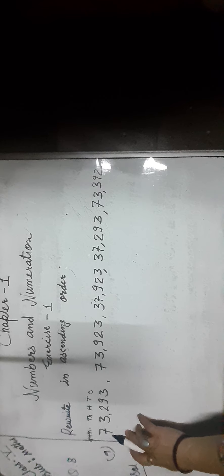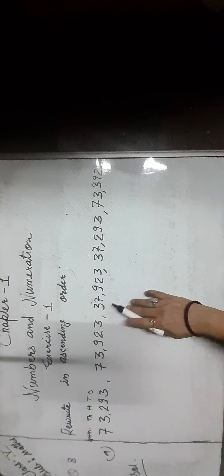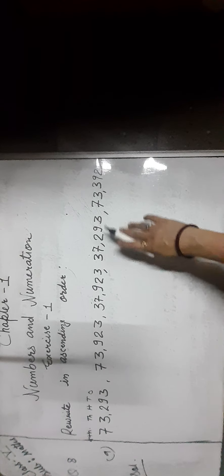As you can see, all numbers have five digits — ones, tens, hundreds, thousands, and ten thousands. Now first we compare the ten thousands place digit, that is 7, 7, 3, 3, 7. As you can see, 3 is smaller than 7, so we have to find out — we have to compare both numbers whose ten thousands place digit is 3.